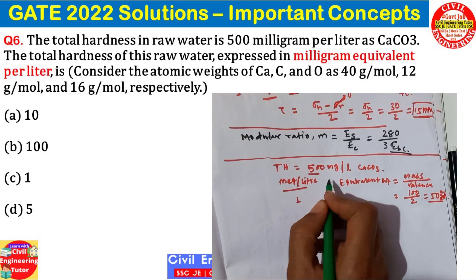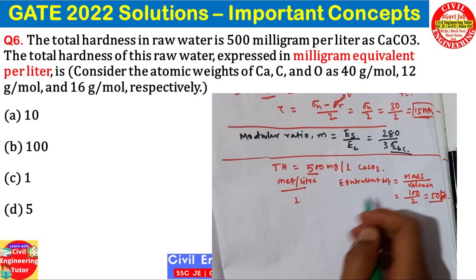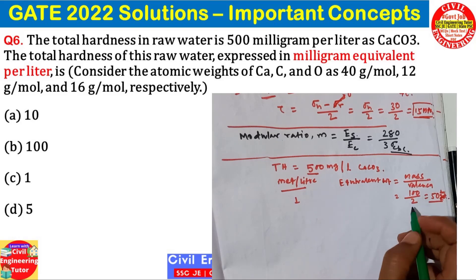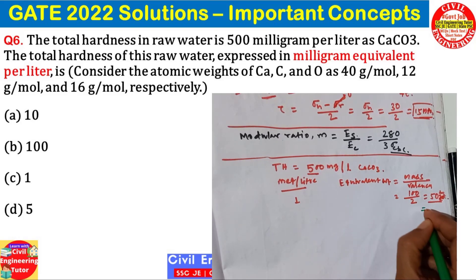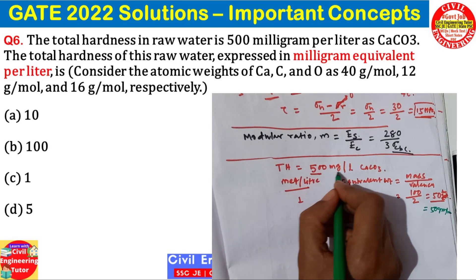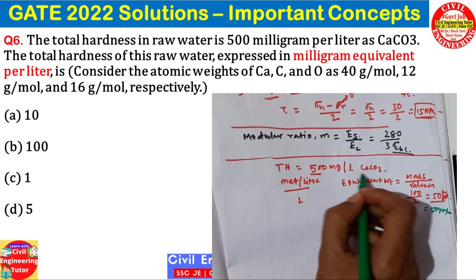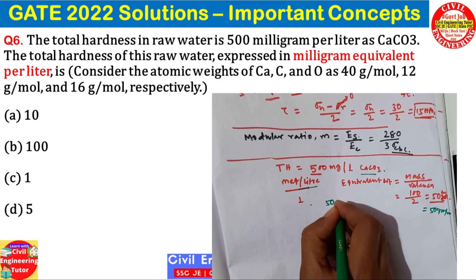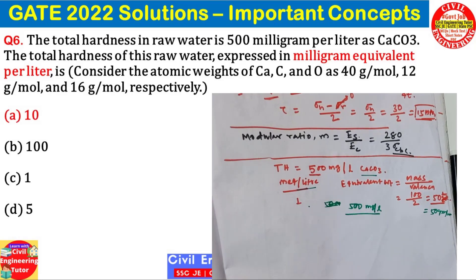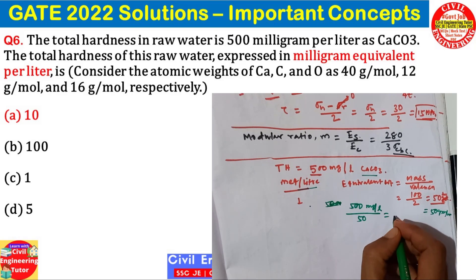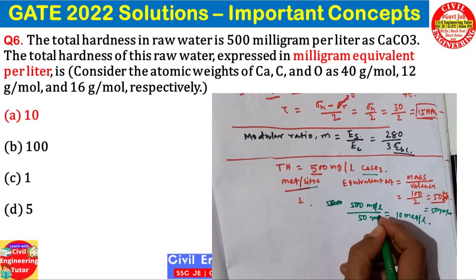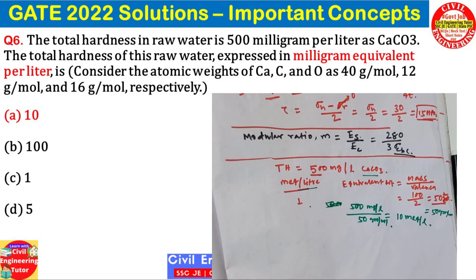In this problem, total hardness is given as 500 milligrams per liter of calcium carbonate. First, we need to find the equivalent weight of calcium carbonate, which is mass divided by valency. The mass of calcium carbonate is 100 grams and valency is two, giving 50 grams per mole as the equivalent weight. To convert the total hardness of 500 mg/L of calcium carbonate to milliequivalents per liter, we divide by the equivalent weight of 50. This gives 10 milliequivalents per liter. The correct answer is A.